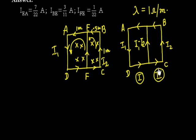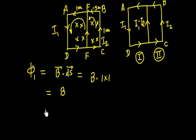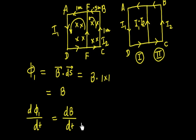For Loop 1, the flux phi1 = B · dS. The area of Loop 1 (AEFD) is 1 meter × 1 meter = 1 square meter. So phi1 = B × 1. Therefore, dΦ1/dt = dB/dt × 1 = 1 volt. So the induced EMF in Loop 1 is 1 volt.